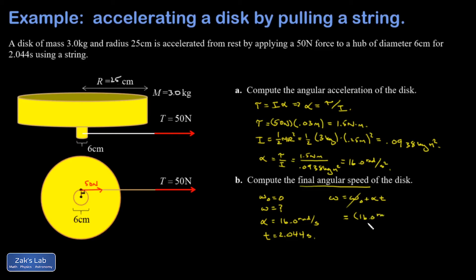I get 16.0 radians per second squared multiplied by 2.044 seconds. I can see one factor of seconds cancels and I get radians per second, so that's good. And it comes out to 32.7.